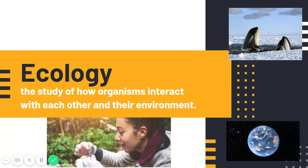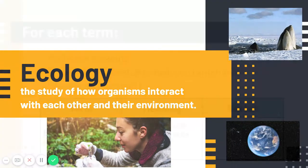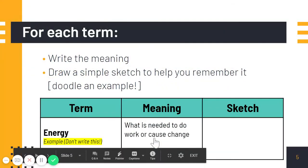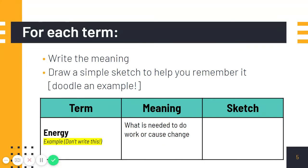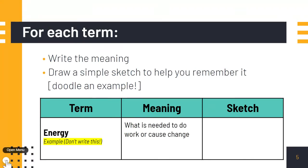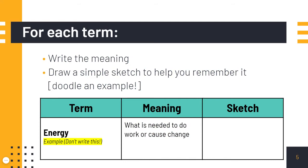Ecology is the study of how organisms interact with each other and their environment. In your notebook, make a table with terms, meanings, and a sketch. Write down the term I'm about to go through, give its meaning, and then sketch or doodle some kind of example in your notebook.